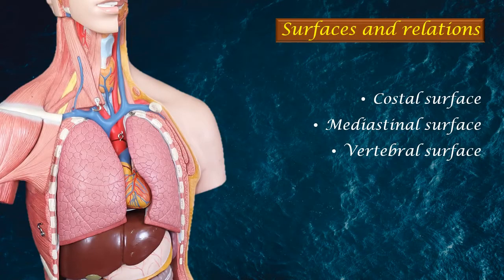Now let's begin. We have already covered general introductory concepts about the gross features of the lung in the first video, where I introduced the shape of the lung, apex, base, surfaces, fissures, and everything. Now we will directly go to the costal, mediastinal and the vertebral surfaces.